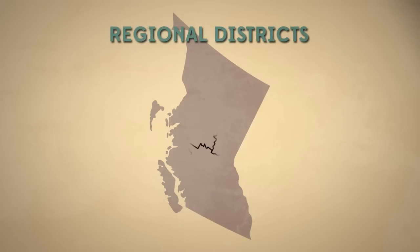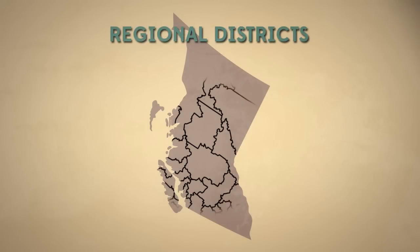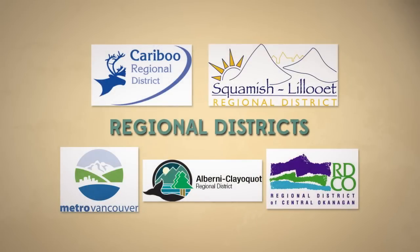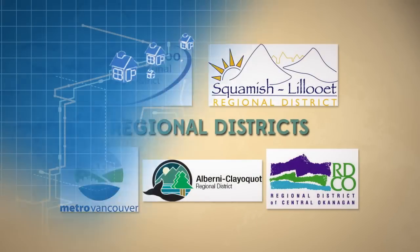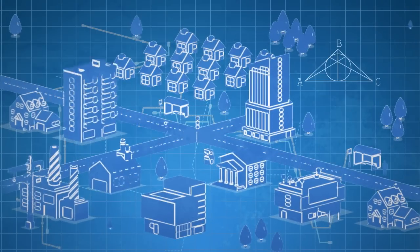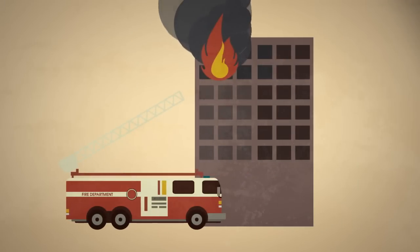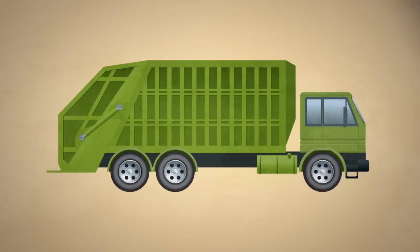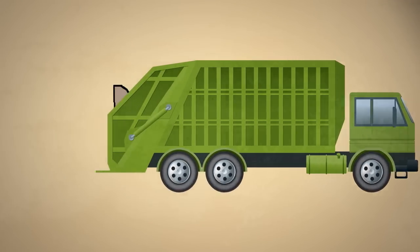Municipalities, along with non-municipal areas, form part of the regional district system. There are 27 regional districts, and together they cover most of the province. Regional districts coordinate larger services, like land use and planning, fire protection, and waste management for several municipalities and non-municipal areas.